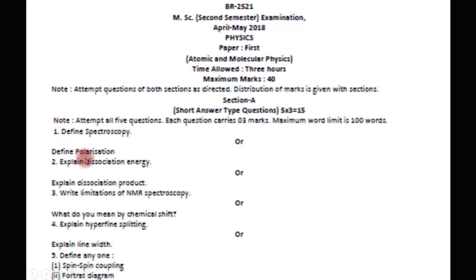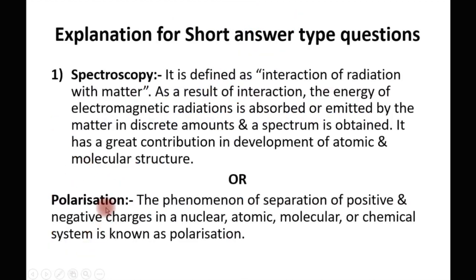The next question is: define polarization. The term polarization stands for the separation of positive and negative charges. Polarization is the phenomenon which gives us separate positive and negative charges — or we can say it gives us separate poles of positive and negative charges in a nuclear, atomic, molecular, or chemical system. Such a phenomenon of separation of positive and negative charges is known as polarization. Because of this polarization process, we are able to get dipoles, since a dipole is formed when two charges are separated by a small distance.